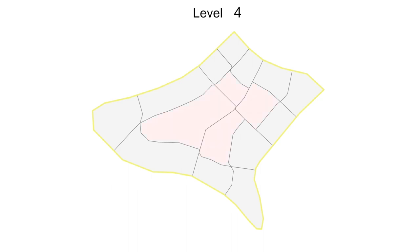Otherwise, we cluster the unreachable parcels and generate new streets for creating street access for each of the parcels. We connect the new street to the existing street network to ensure that the network is geometrically connected.